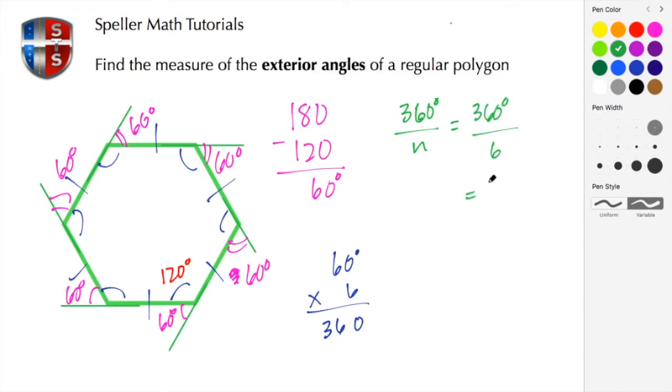That expression gives us the measure of each exterior angle. And in this case, we see that that is 60 degrees. So again, that's a faster way of coming to the answer or completing the task here at hand.